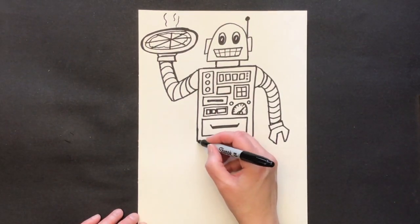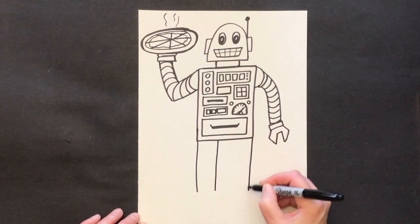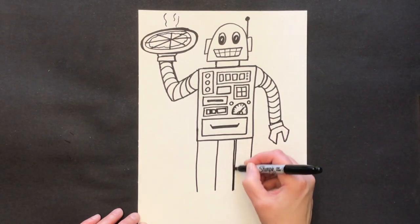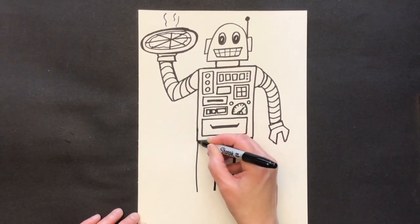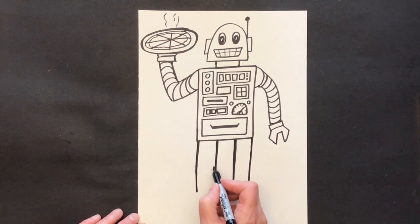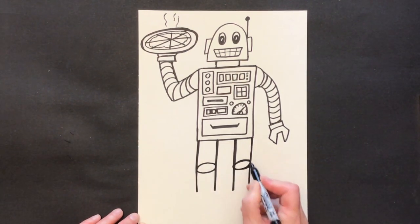And I need to do some legs. I'm going to do some rectangle legs. So I'm going to do two rectangle shapes coming down. And even though this robot is standing still for the moment, he needs to be able to bend his legs. So I'm going to draw some ovals in where the knees would be.